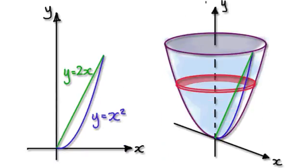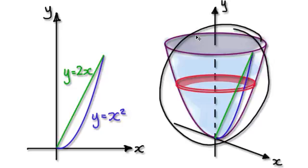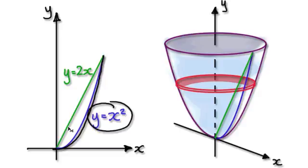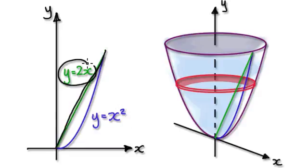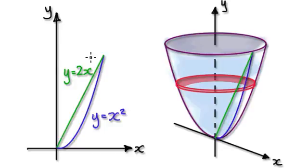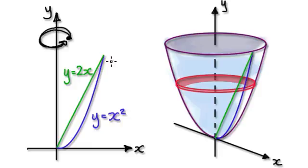Let's give you guys some more practice. Work out the volume of this solid here. The equation for this line here is given by y equals x squared. This straight green line is given by this. So this area here corresponds to this area here. We're going to rotate it along the y-axis, 360 degrees around the y-axis.